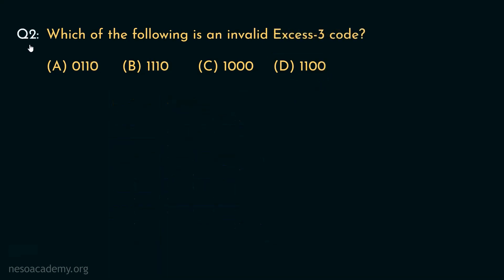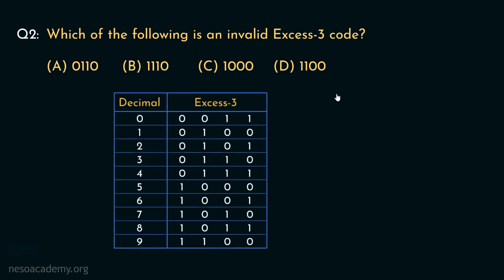Let's move on to the next question: which of the following is an invalid XS3 code? Similar to the previous way, we will again take the help of the chart that we have seen in the previous session and, judging all the different options one by one, we will find out the invalid one. Coming to option A, it is 0110. Now if you observe, for the encoding of 3, we have 0110 in XS3. So this is a valid XS3 code.